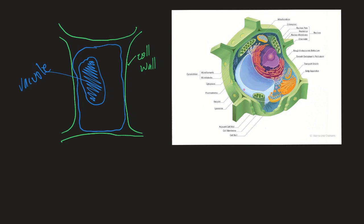Another organelle unique to plant cells is the chloroplast — a green organelle. The chloroplast contains stacks of membrane-bound structures inside it, and it's there that sunlight is captured for photosynthesis. So the chloroplast is the site of photosynthesis. These are the organelles that are different in a plant cell compared to an animal cell.